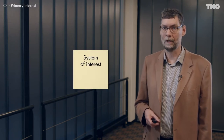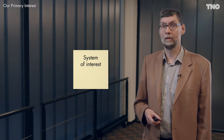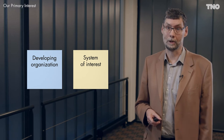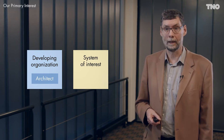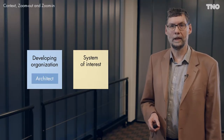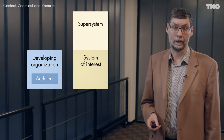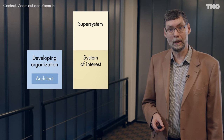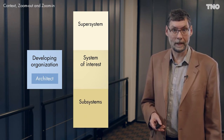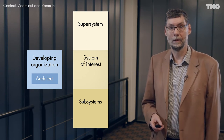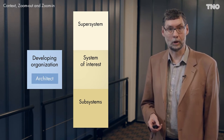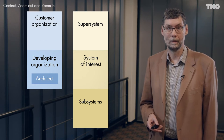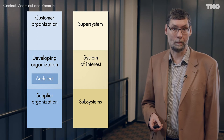If we look at this from a distance, we see that we are talking about a system of interest — in the video, that's the lighting system — being developed by a developing organization, which in the video is Philips Lighting. The architect makes sure that we build a system of interest that fits the stakeholder needs. The system of interest is part of a larger super system — here, the lighting system is part of the building. The system of interest is also partitioned into subsystems. Similarly, the developing organization interacts with customer organizations for the super system and supplier organizations for the subsystems.